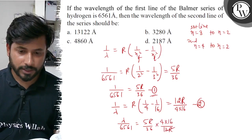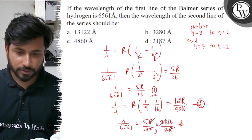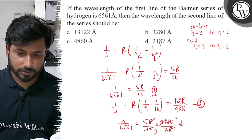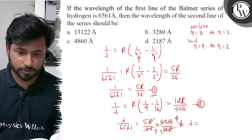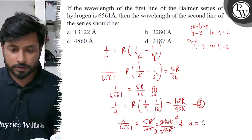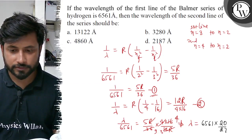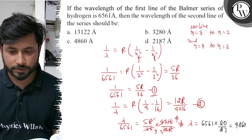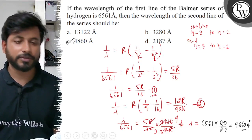Now R cancels. Simplifying: 6561 times 20 by 27. This gives lambda equals to 4860 angstrom. So the final answer is 4860 angstrom, which is Option C. Best of luck.